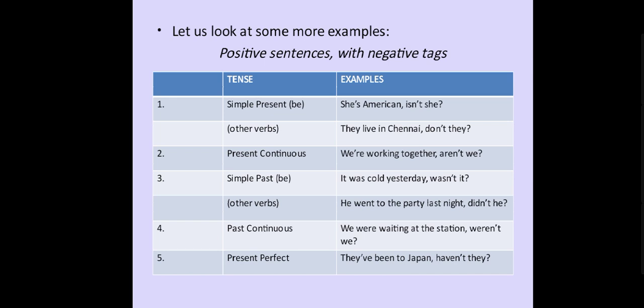Let us look at some more examples. These are positive sentences with negative tags, tense-wise. Simple present tense with 'be' verb — 'She is American, isn't she?' With other verbs — 'They live in Chennai, don't they?' Present continuous tense — 'We are working together, aren't we?'